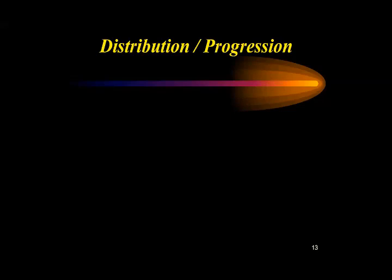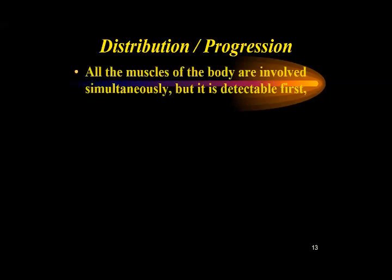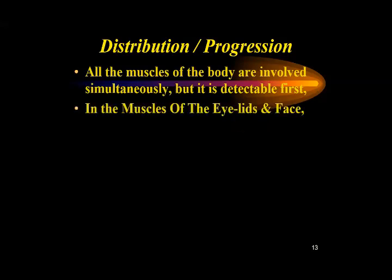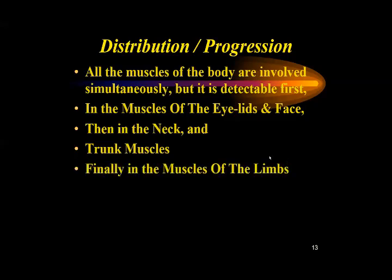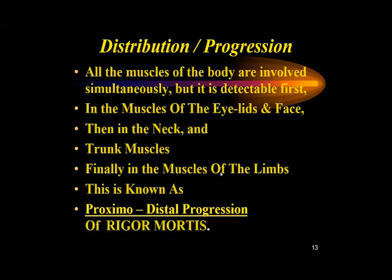Regarding distribution and progression: all the muscles of the body are involved simultaneously, but rigor mortis is detectable first in the muscles of the eyelids and face, then in the neck, then the trunk muscles, and finally in the muscles of the limbs. This is known as the proximal-to-distal progression of rigor mortis — it starts from the proximal muscles to the distal muscles of the body.